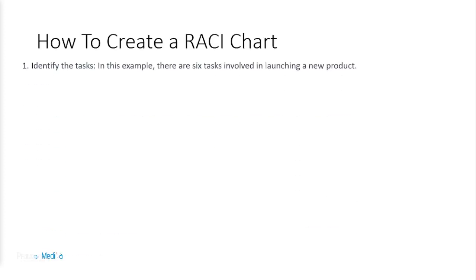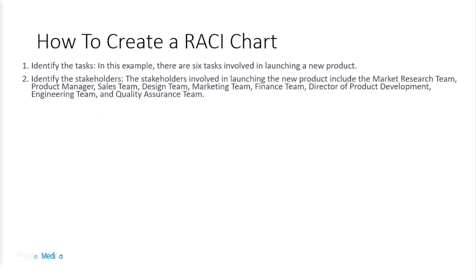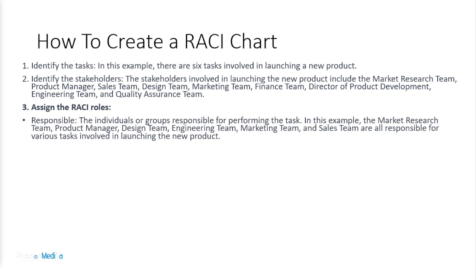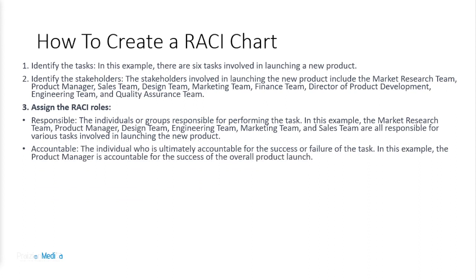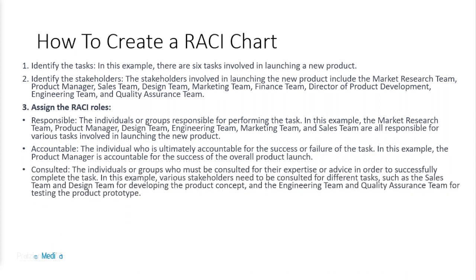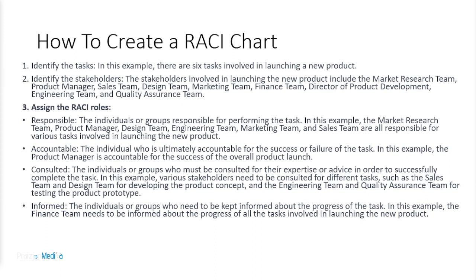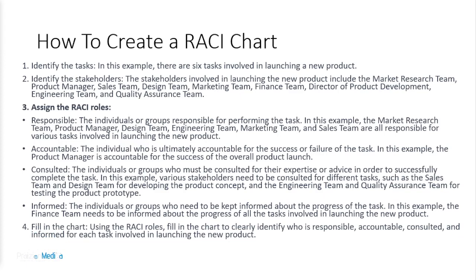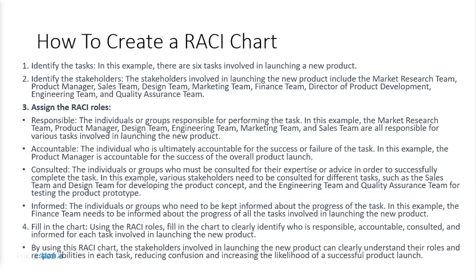So how do you create a RACI chart? You identify the tasks — in the example I'll show you, there are six tasks involved in launching a new product. We identify the stakeholders — people who could be involved. Then we assign the RACI roles: responsible — the individuals performing the task; accountable — ultimately answerable; consulted — the individuals or groups who must be consulted; and informed — the individuals or groups who need to be kept informed about the progress of the task. Then we fill in the chart to clearly identify who is responsible, accountable, consulted, and informed. Beware: you don't want two A's in any one task. By using this, the stakeholders involved in launching the product would clearly understand their roles and responsibilities.